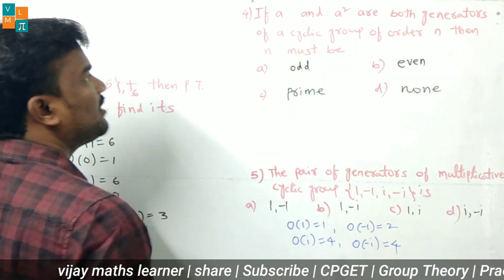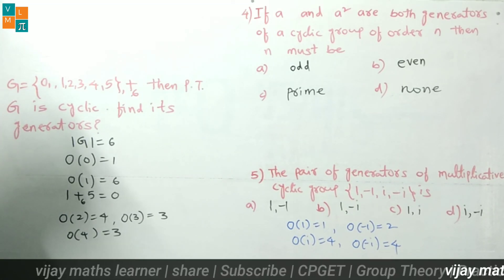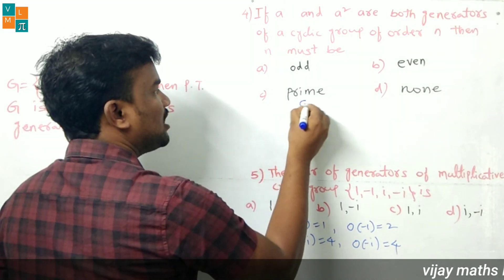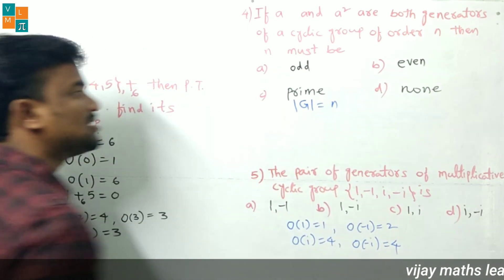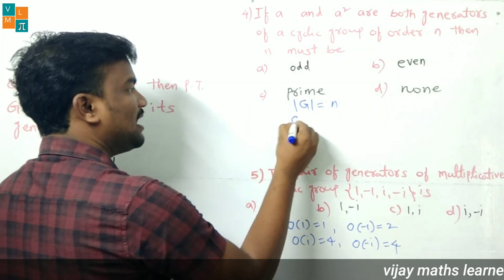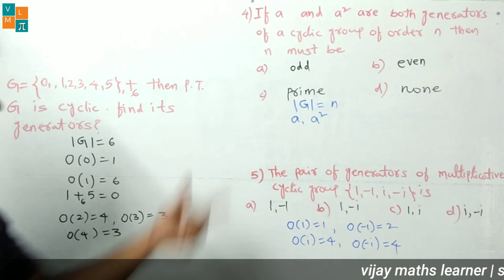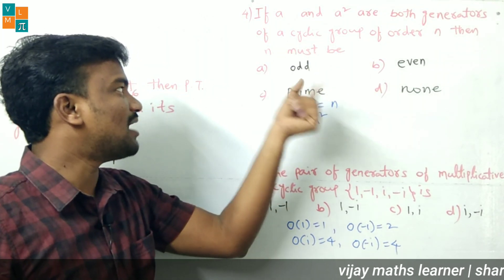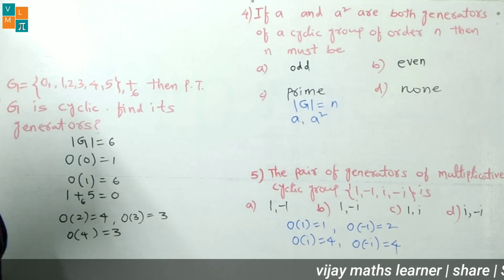The fourth question: if a and a² are both generators of a cyclic group of order N, then N must be — odd, even, prime, or none? Given G is a cyclic group of order N, and both a and a² are generators. We need to find what N must be.